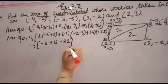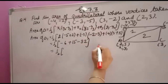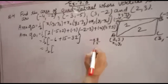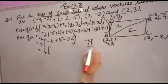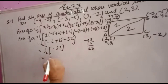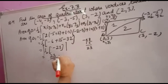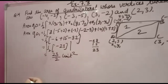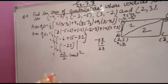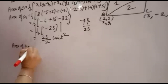So you get -6 + 15 - 32, which gives -23. Since area cannot be negative, you take the modulus, giving 23/2 square units. This is the area of triangle 1.